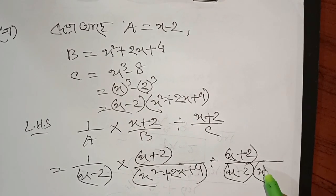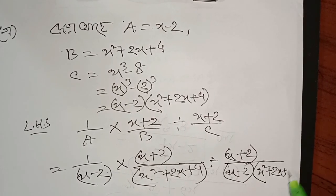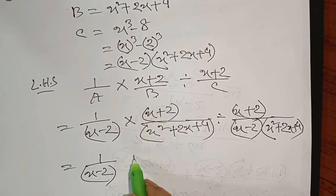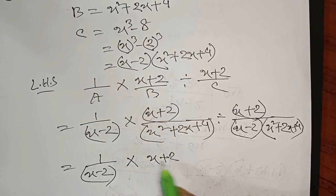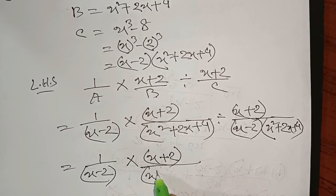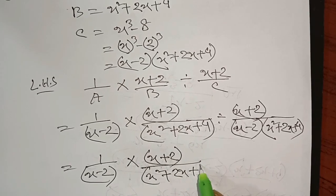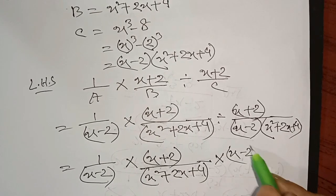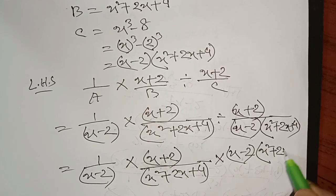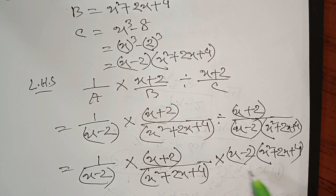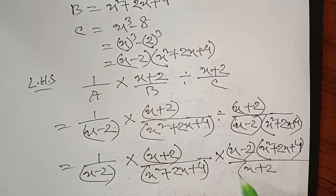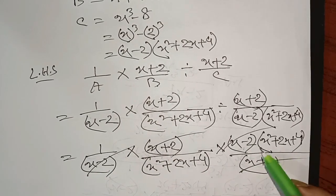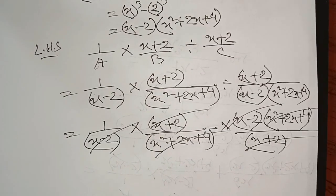x minus two into x square plus 2x plus four. We don't skip any steps here — we carefully write them. x plus two, x square plus two x plus four. For the multiplication term, we write it inverted above. x minus 2 into x square plus 2x plus 4 — and for x plus 2, x plus 2, we keep that below — all three terms are being cancelled.